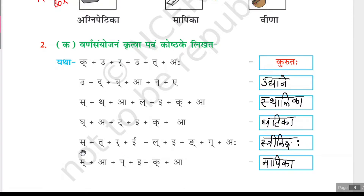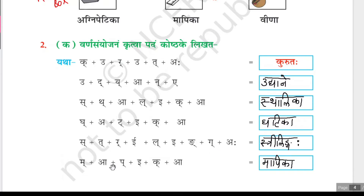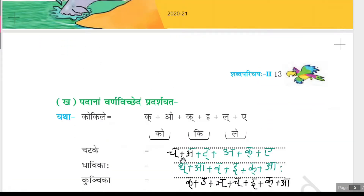Next: isth plus isth plus ikk plus iri plus ee plus il plus ee plus il plus ee plus ingk plus igk plus aha. These four letters together make sthri, ill plus il plus ee is li, ingk plus igk plus aha is lingkaha, so sthrilingkaha. Next: imma plus aa plus ikk plus ee plus ikk plus aa gives maapika.